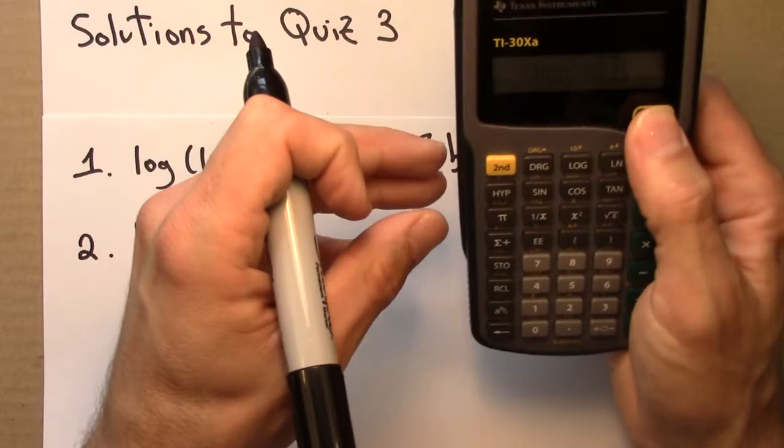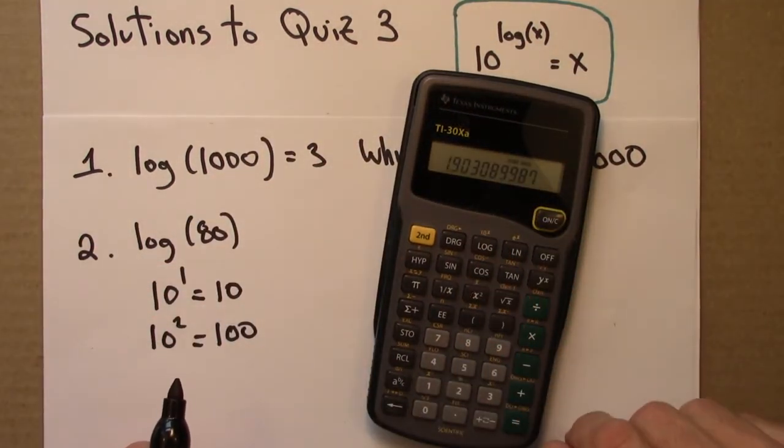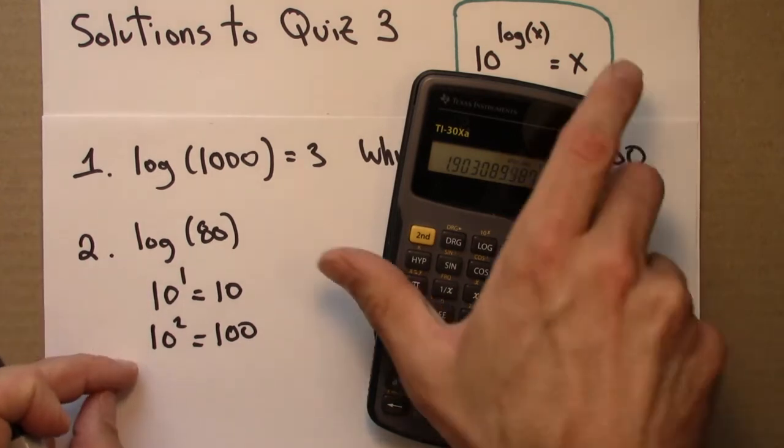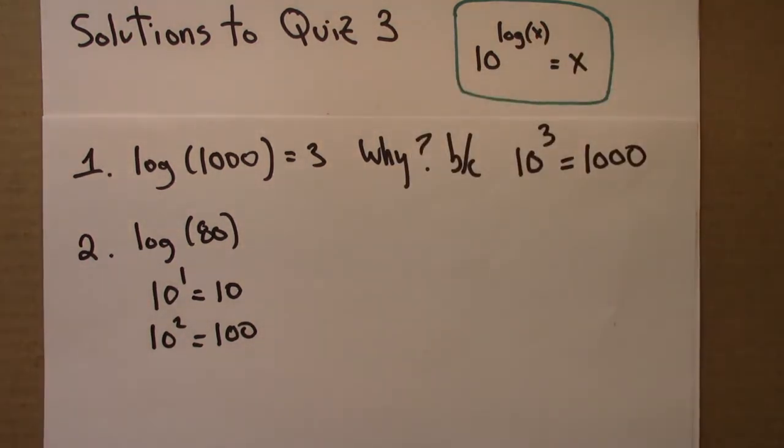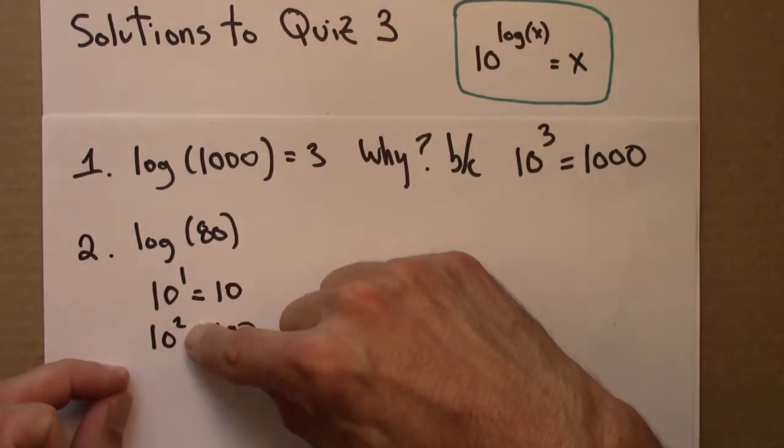And I can cheat or confirm. 80 log is 1.9. So it really is between 1 and 2. But again, we don't need a calculator to be able to answer that it is between 1 and 2.